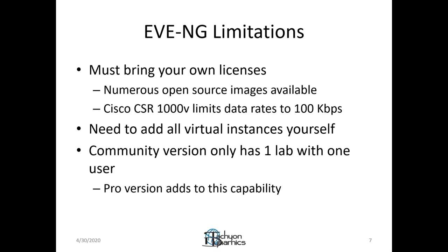The other limitation is the community version. There are two versions — pro and community. I'm going to demonstrate the community version here. The community version is the open source free version, and it really gives you only one lab with one user. If you're just trying to test and do some network emulation and not trying to do too much, this is all you really need. The pro version adds more users and the capability for more simultaneously running labs. That one you have to pay for — I think it's about $1,000 per year as a yearly subscription.